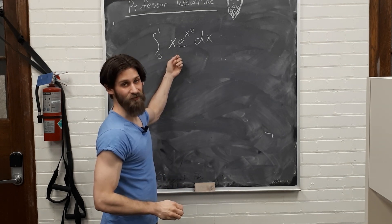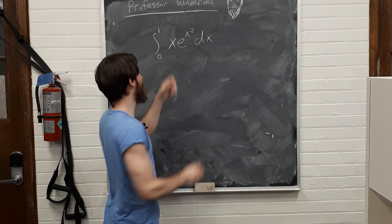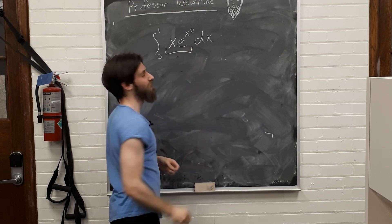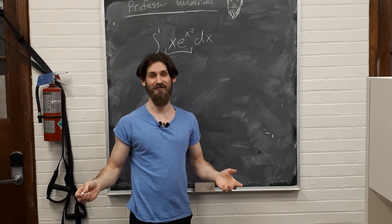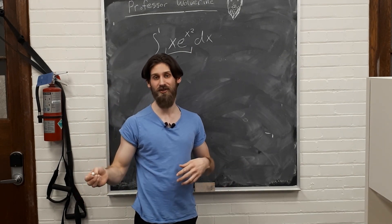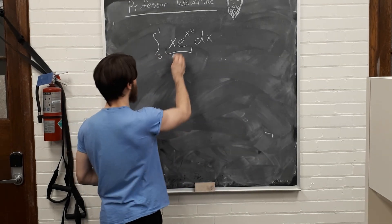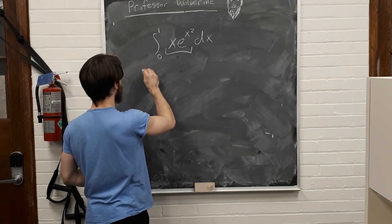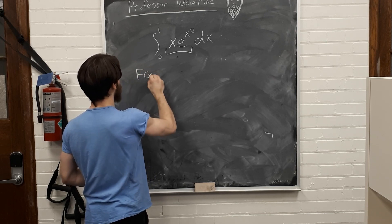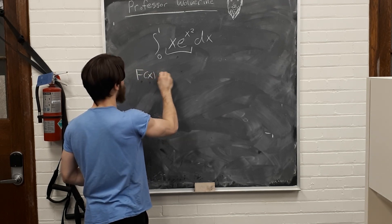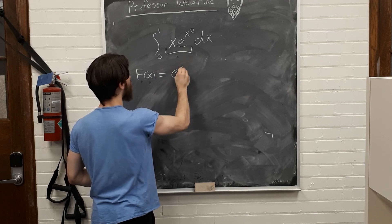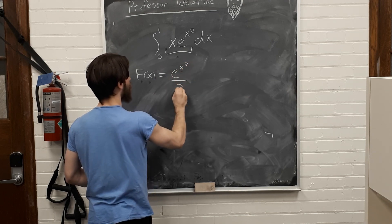But, let's deal with the fundamental theorem of calculus. So, remember, what do we have to do? We have to find an antiderivative of this function. So, what is an antiderivative of this function? Well, you could use substitution, and what you'll find is that an antiderivative of this function is this function. Let F of x be equal to e to the x squared over 2.